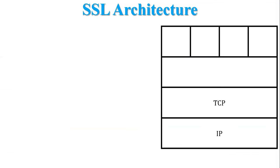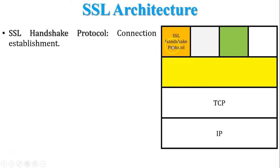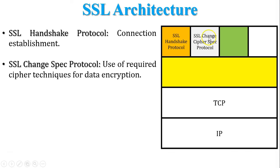SSL is not a single protocol to perform security tasks. There are two layers of sub-protocols which support SSL. The first sub-layer consists of three protocols, called the higher layer protocols in SSL. There is one protocol in the lower layer of SSL. The first protocol of the higher layer is the SSL Handshake Protocol, responsible for connection establishment between client and server. The next higher-level protocol is SSL Change Cipher Spec Protocol.